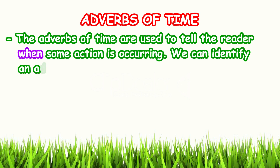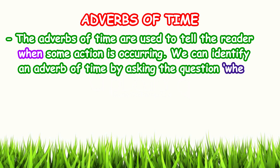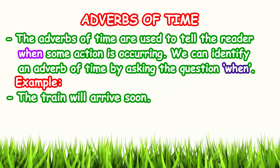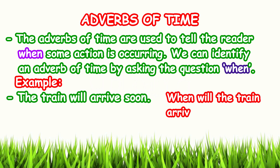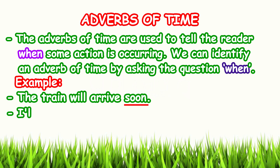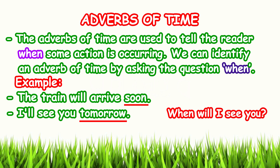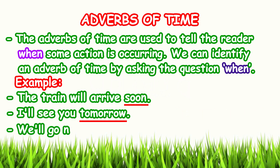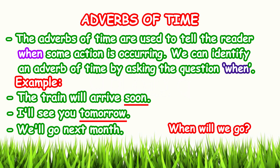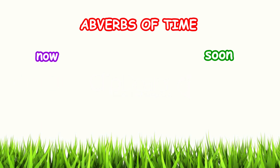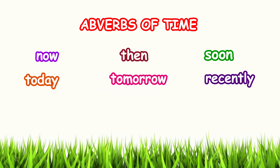Let's check out adverbs of time. Adverbs of time are used to tell the reader when some action is occurring. We can identify an adverb of time by asking the question 'when?' For example: 'The train will arrive soon' — when will the train arrive? Soon. 'I'll see you tomorrow' — when will I see you? Tomorrow. 'We'll go next month' — when? Next month.